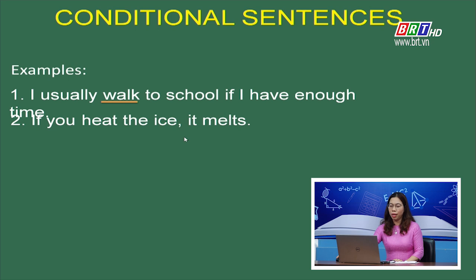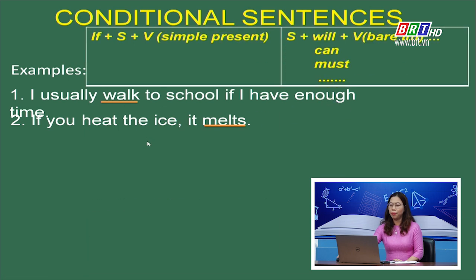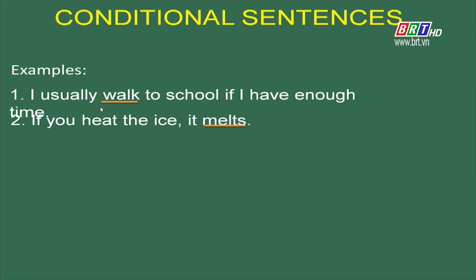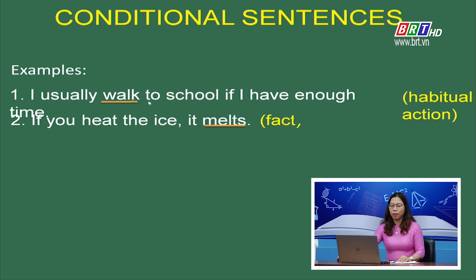Tại sao mệnh đề chính lại dùng hiện tại đơn? Câu thứ nhất: tôi thường đi bộ đến trường nếu tôi có đủ thời gian — diễn đạt một thói quen. Câu thứ hai: nếu bạn làm nóng tảng băng, nó tan chảy — diễn đạt một sự thật hiển nhiên. Vậy, nếu câu diễn đạt một thói quen hoặc một sự thật hiển nhiên, mệnh đề chính của câu điều kiện loại 1 sẽ dùng thì hiện tại đơn thay cho tương lai hoặc động từ khiếm khuyết. Cả 2 mệnh đề đều dùng thì hiện tại đơn.